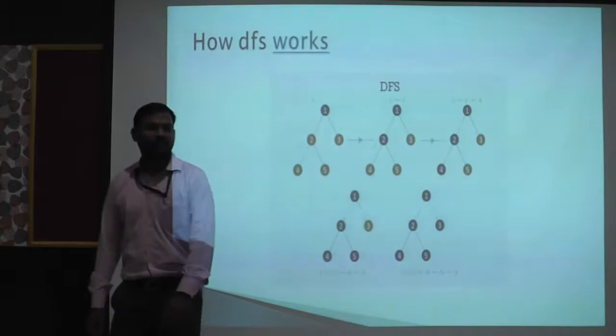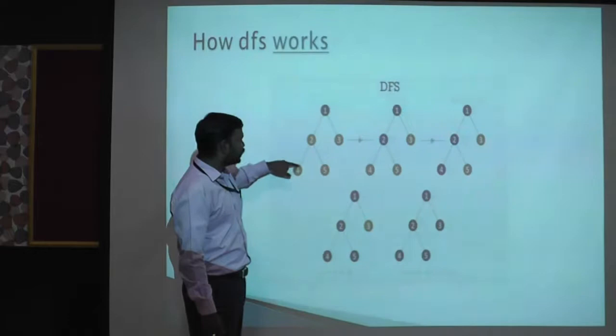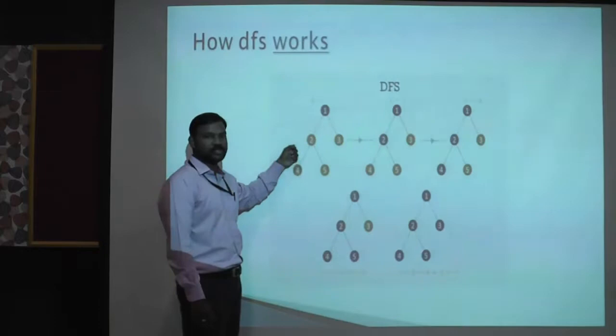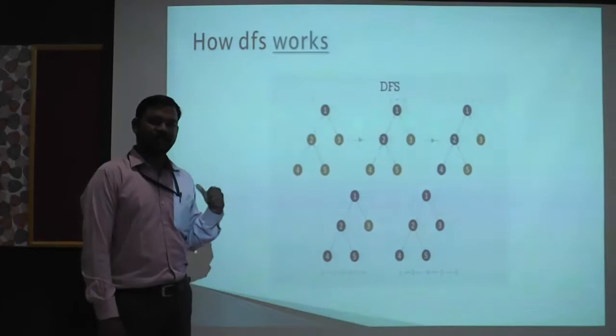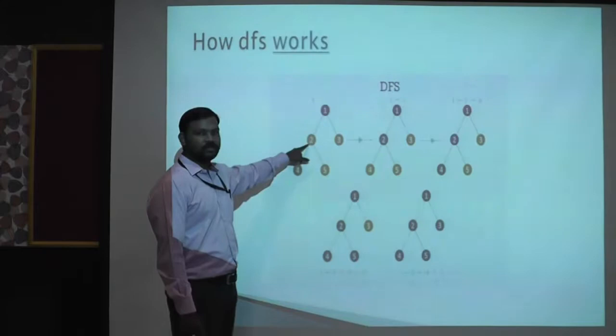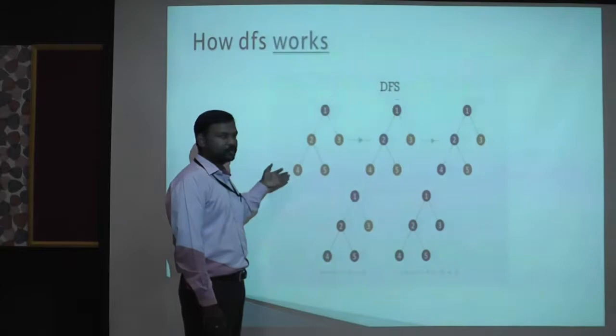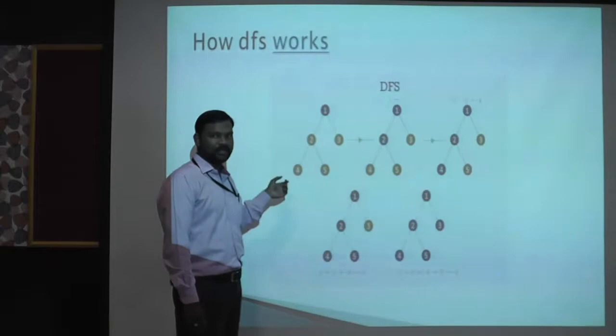The problem with this search is that if you are proceeding with the starting node and iterating through all the nodes in an infinite graph, it keeps on iterating and will never come back to its original position. This is the problem with depth-first search. However, in terms of memory optimization, depth-first search is actually an optimized solution because it consumes very less memory compared to other searching techniques. But if you are considering an infinite graph, it is not the best solution.